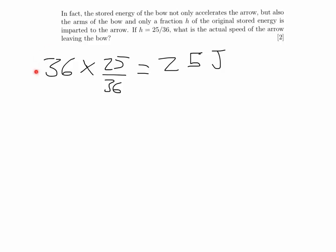So we're taking the 36 joules of energy that was stored before, and we're multiplying it by this factor. So that's 25 joules of energy left over. And that's the energy that goes into propelling the arrow forward.